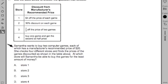The second part is the question itself. Samantha wants to buy two computer games, each which has a manufacturer's recommended price of $20. She checks four different stores and finds the prices of each game discounted as shown in the table above. At which store will Samantha be able to buy the games for the least amount of money?